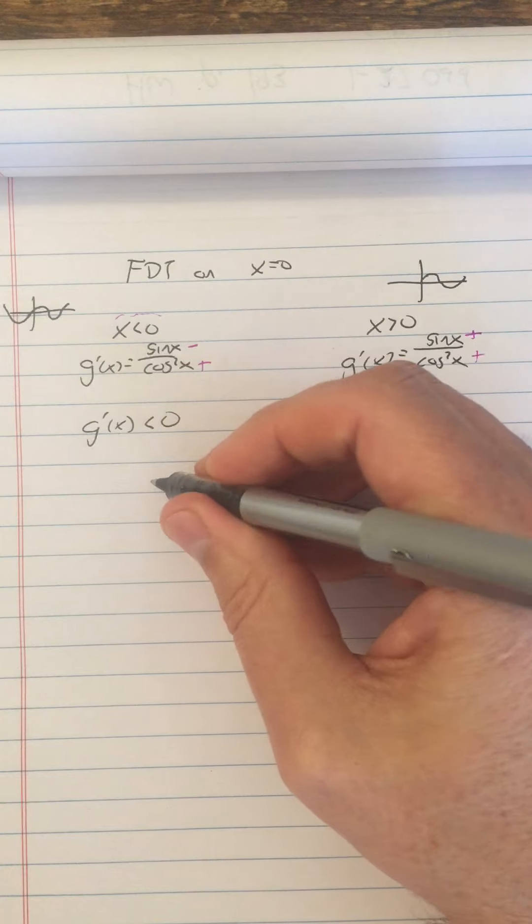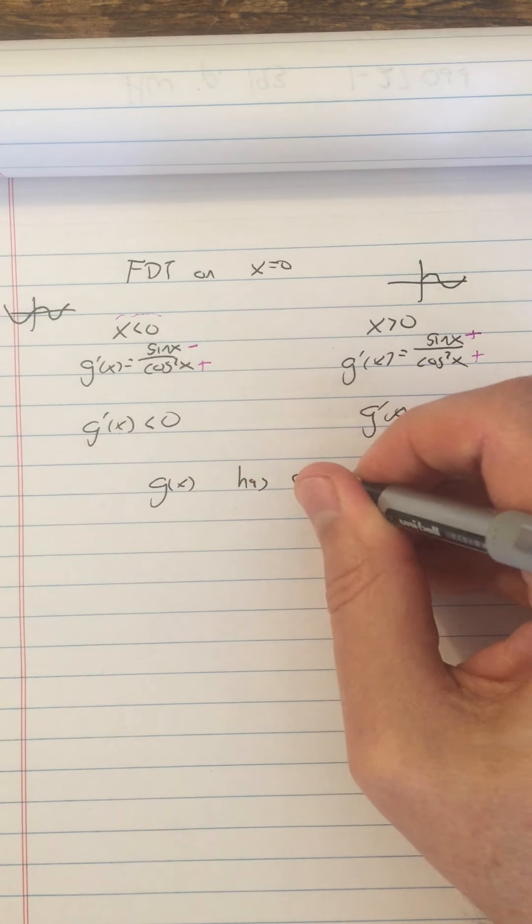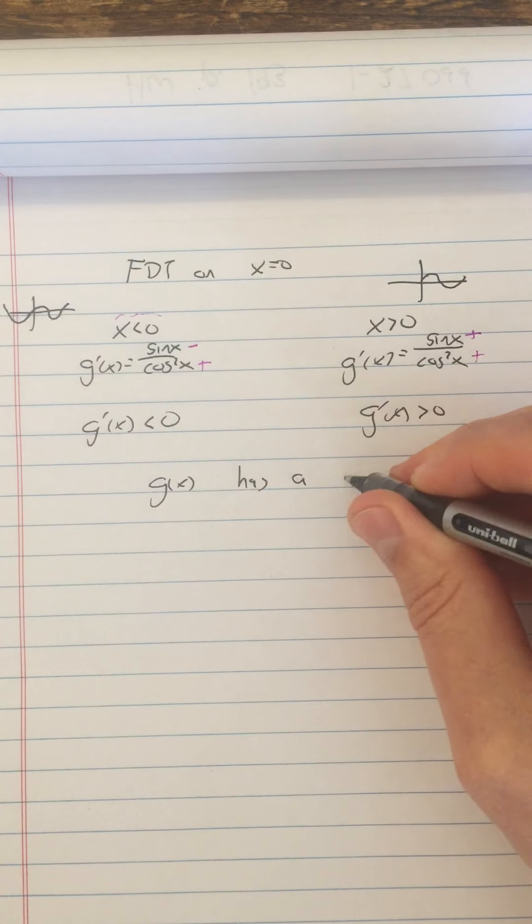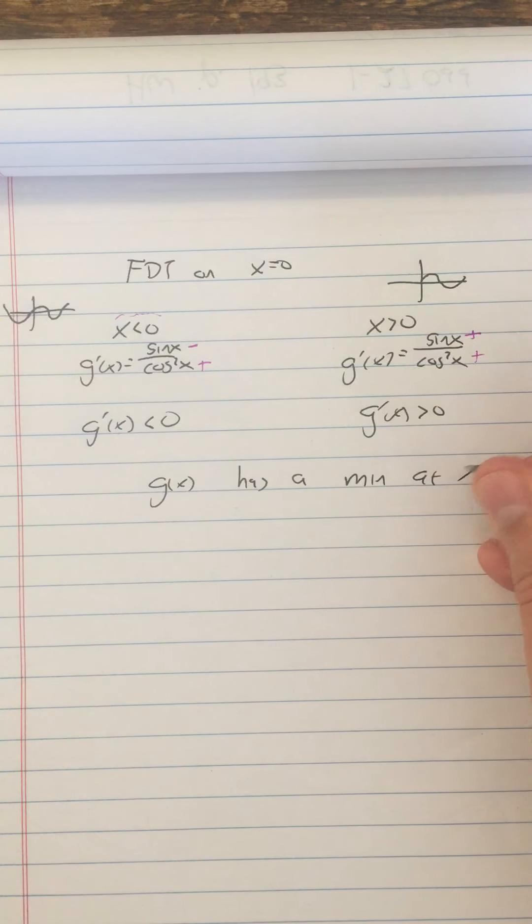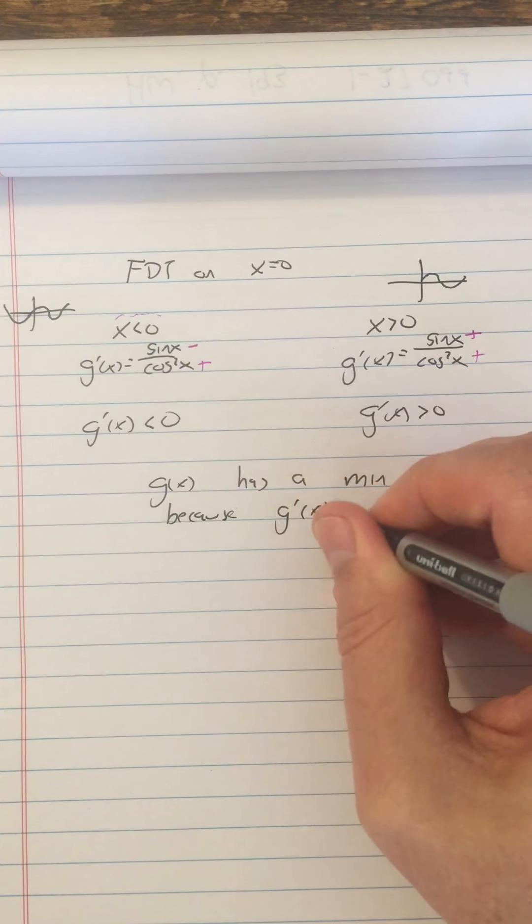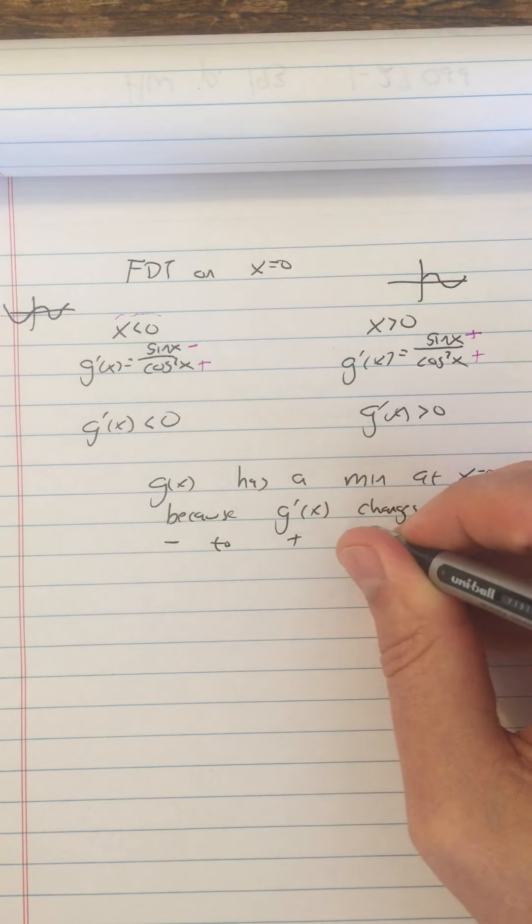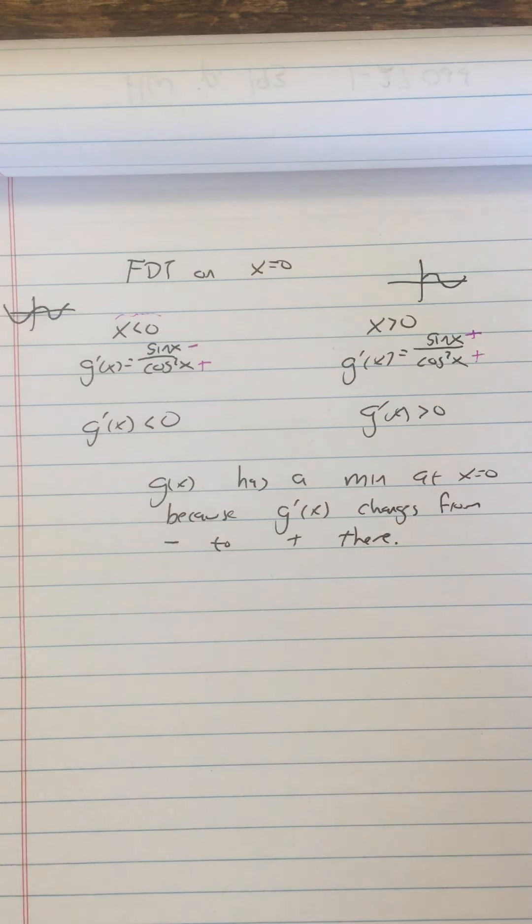So now we know that G of x has a what? A min at x equals zero because G prime changes from negative to positive there. That's just at x equals zero.